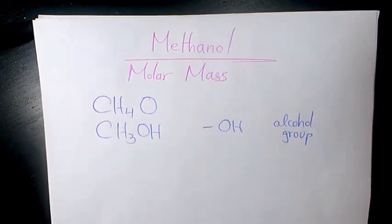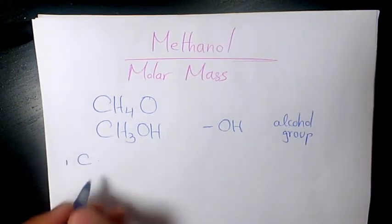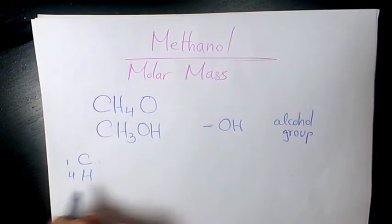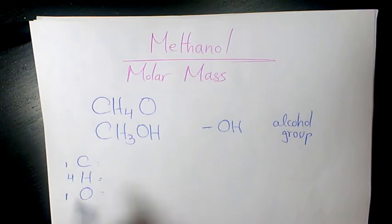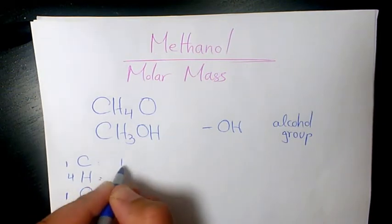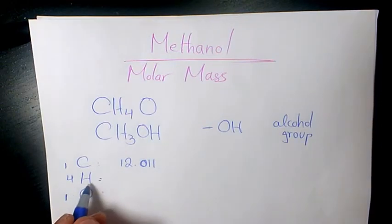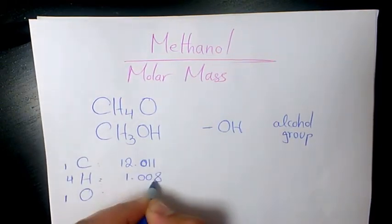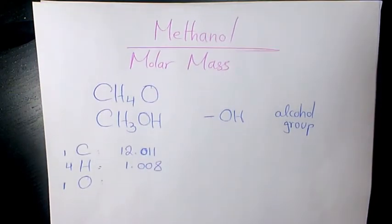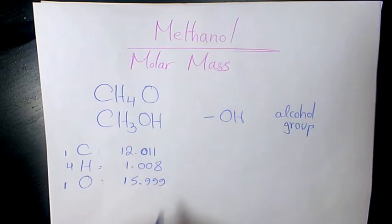To find molar mass, we need to find the atomic mass of each element. We have one carbon atom, four hydrogen atoms, and one oxygen atom. The atomic mass of carbon is 12.011, hydrogen is 1.008, and oxygen is 15.999. These are the atomic masses from the periodic table.